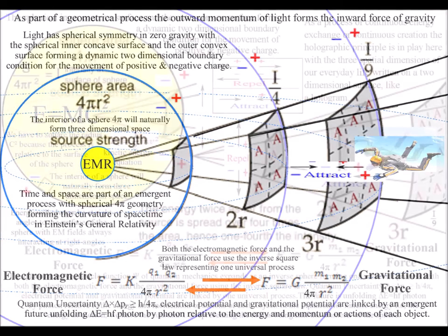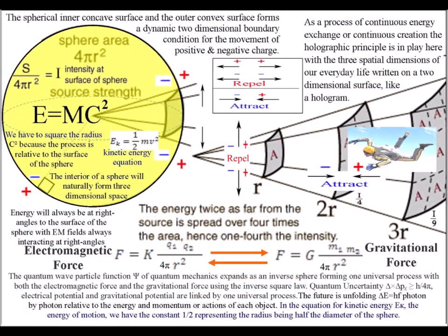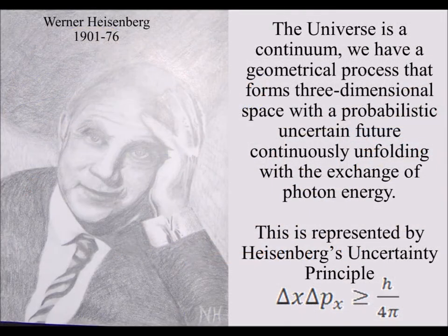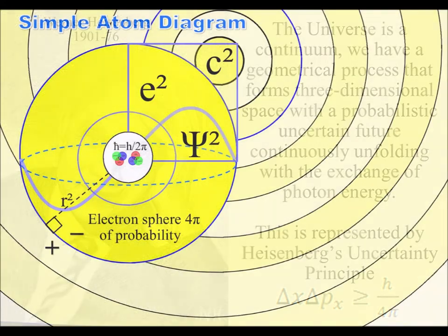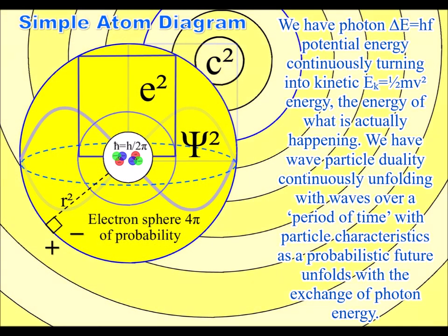This geometrical process does not unfold in three-dimensional space over a period of time, but forms three-dimensional space with a probabilistic uncertain future. This uncertain future is formed by light photon energy continuously transforming potential energy into the kinetic energy of matter in the form of electrons.